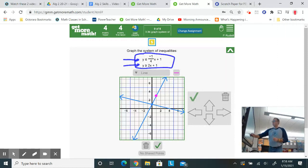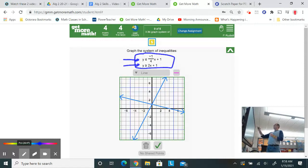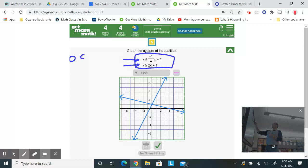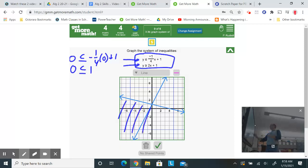Now I need to think to myself, self, which way do I shade? Where's the overlap? So let's go back to the first inequality on the top, and I'm going to test zero, zero. So if I put a zero in for y, and I put a zero in for the x, negative one-fourth times zero plus one, I get zero here, and I get a positive one here, zero is less than one, so that is true. So I want to shade everything going this way.